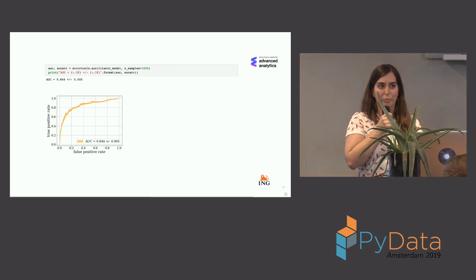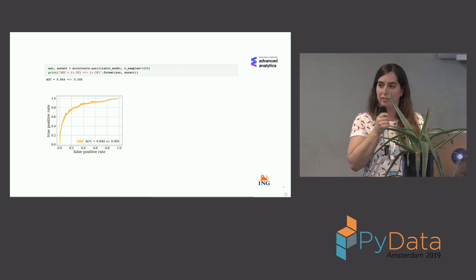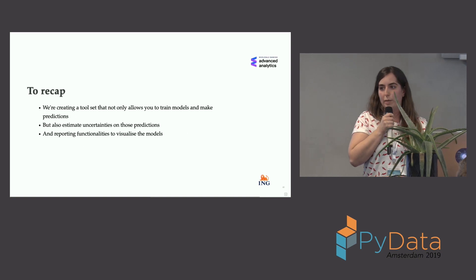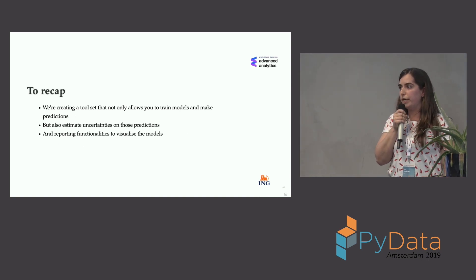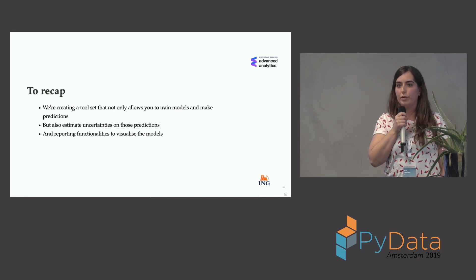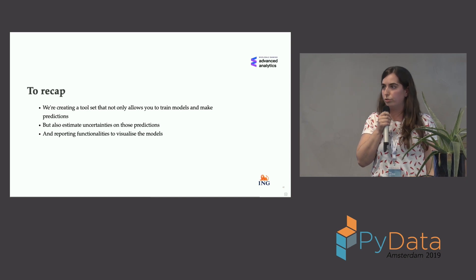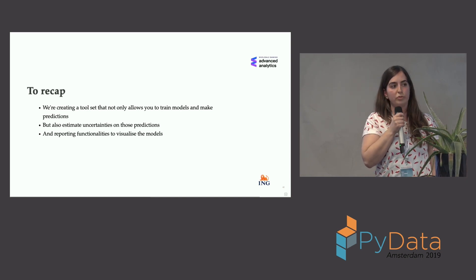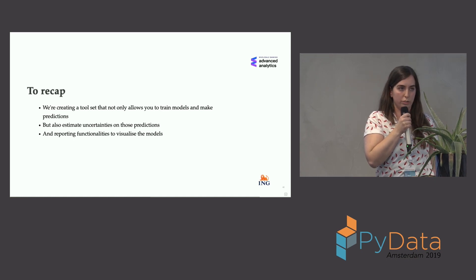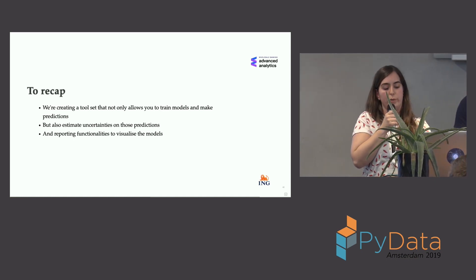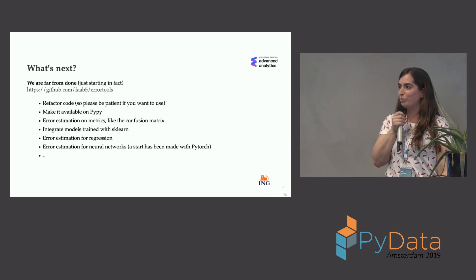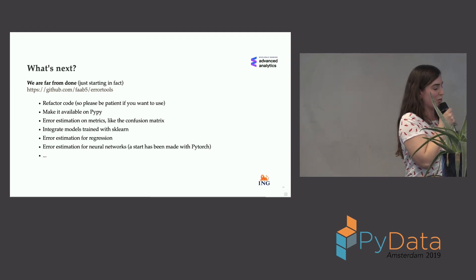So keep in mind uncertainties do not only propagate to your predictions but also to the metrics you show about your model. To recap: we're building a Python package not only for training models but also for estimating uncertainties on those predictions, and on top of that we've made reporting visualizations to help you interpret these uncertainties. We started only about two or three months ago, so please have a look at our GitHub, but bear with us as we still need to refactor a lot.